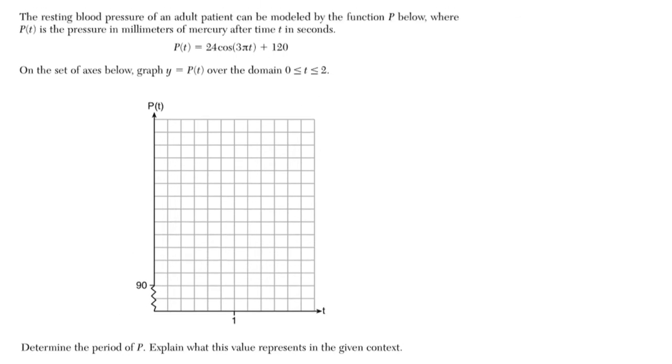In this case, we have a resting blood pressure of an adult patient that's modeled by this equation right here. This is a cosine equation. On a set of axes below, graph this over the domain from 0 to 2. And here they say to determine the period and explain what this value represents.